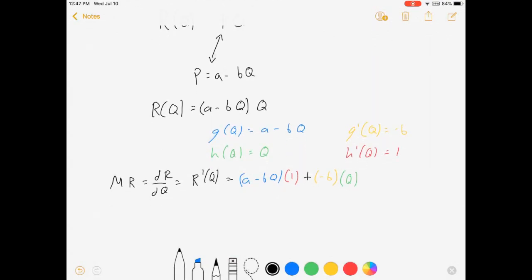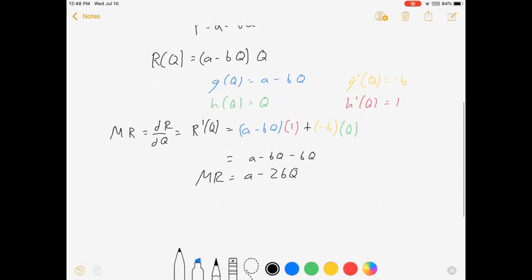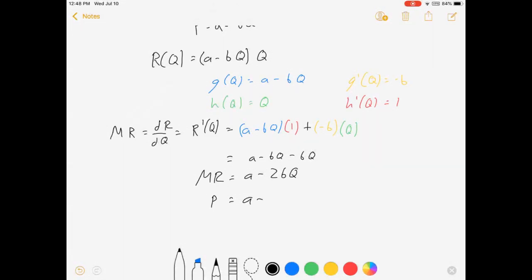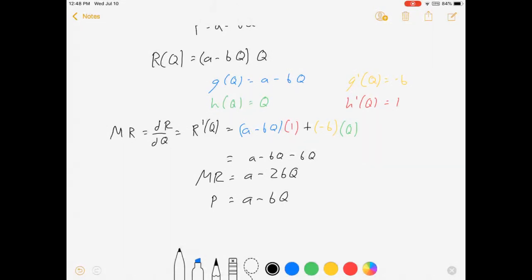What does this simplify to? This is going to simplify down to a minus bq minus bq, which is a minus 2bq. Now, if you're in my class, this should not be a surprising result. I already gave you that price is equal to a minus bq, and I've also told you that the marginal revenue curve is equal to the price curve, except that the slope gets doubled.